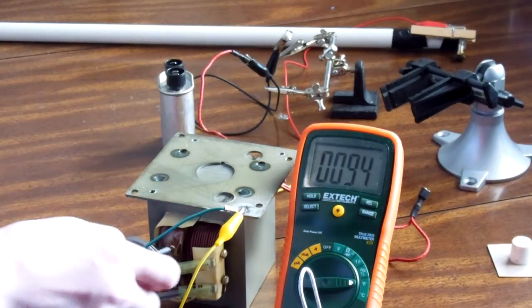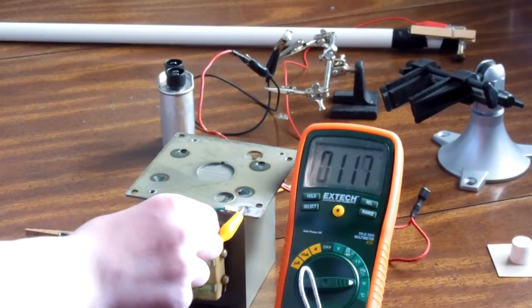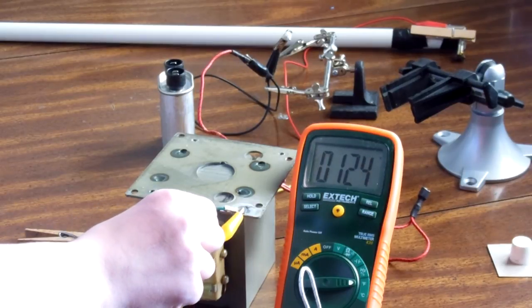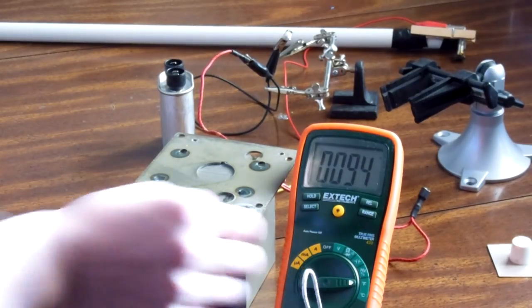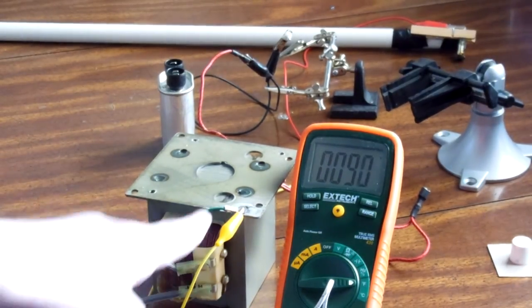And now let's try the primary coil. Primary coil is dangerously hot. That's like 130 degrees, so this thing is pretty hot.